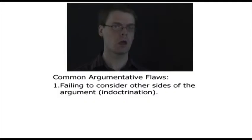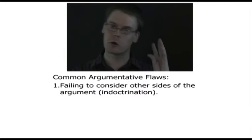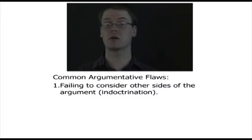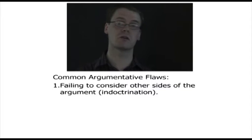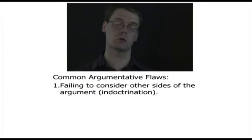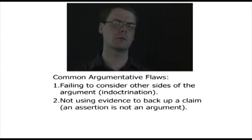Now we're going to look at the final section of the lecture: common argumentative flaws. These are potential traps that you might fall into — things you need to be aware of and make sure you don't do. The first one is failing to consider other sides of the argument. You could argue this is a form of indoctrination — it's like having blinkers on and not wanting to look either left or right. This could be the case if you're trying to make a particular political point. There's nothing wrong with writing political essays, but you do need to consider other points of view and make sure you're not turning it into propaganda.